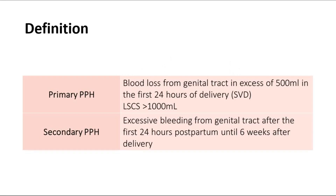Postpartum hemorrhage can be divided into two types: primary and secondary PPH. Primary postpartum hemorrhage is defined as blood loss from the genital tract of more than 500 milliliters within the first 24 hours after delivery. In lower segment caesarean section cases, it is defined as more than 1000 ml. Secondary PPH is excessive bleeding from the genital tract after the first 24 hours until six weeks after delivery.